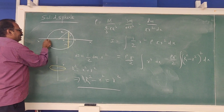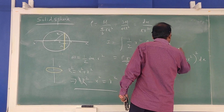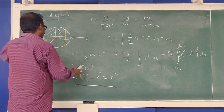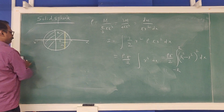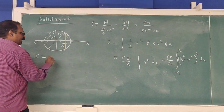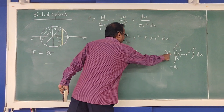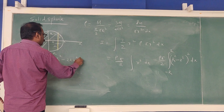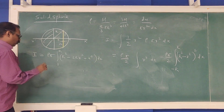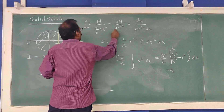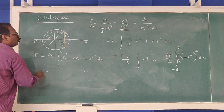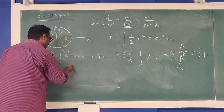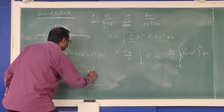The limits for x are from −R to +R. By symmetry, we compute twice the integral from 0 to R. Expanding (R² − x²)² = R⁴ − 2R²x² + x⁴. So I = 2 · (ρπ/2) · ∫₀ᴿ (R⁴ − 2R²x² + x⁴) dx = ρπ ∫₀ᴿ (R⁴ − 2R²x² + x⁴) dx.